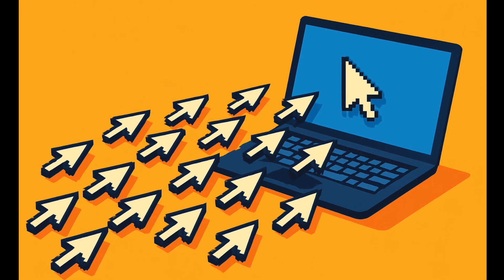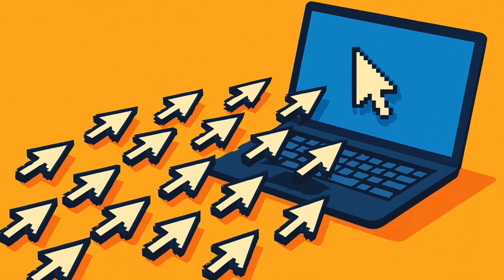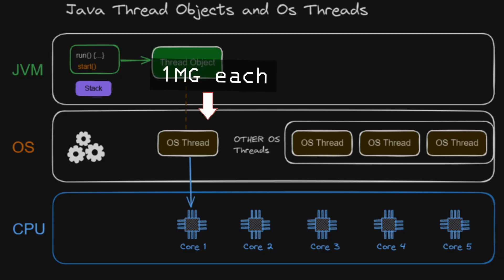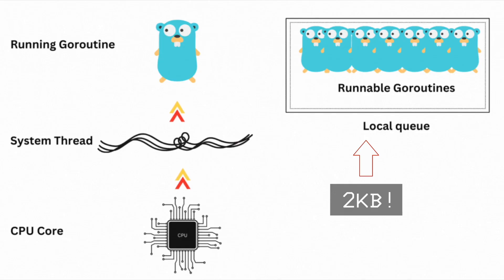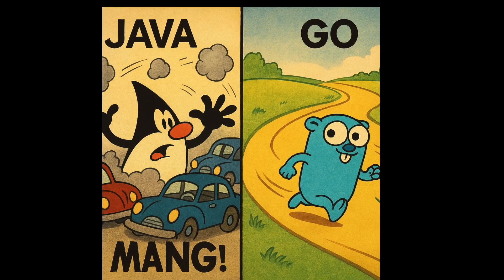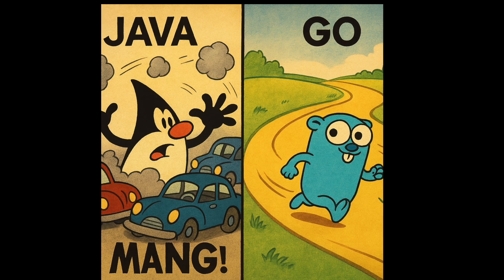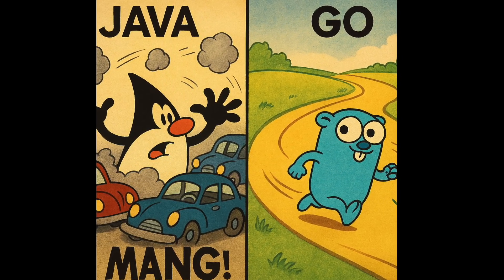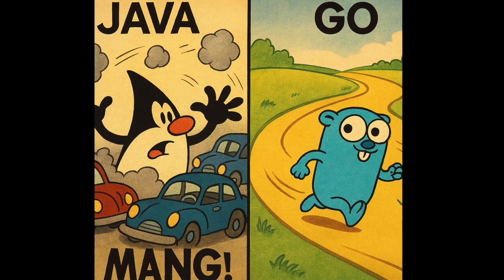The real showdown happens when thousands of users hit your service. Advanced Java uses OS threads, which cost about 1 megabyte each. Go uses goroutines that start at just 2 kilobytes. This means a single Go server can handle thousands of concurrent connections without complex thread pools or manual management, while Java needs complex concurrency patterns.